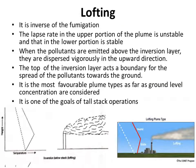Lofting is the inverse of fumigation. The lapse rate in the upper portion of the plume is unstable and that in the lower portion is stable. When pollutants are emitted above the inversion layer, they are dispersed vigorously in the upward direction. The top of the inversion layer acts as a boundary for the spread of pollutants towards the ground. It is the most favorable plume type as far as ground level concentration is concerned, and is one of the goals of tall stack operations.